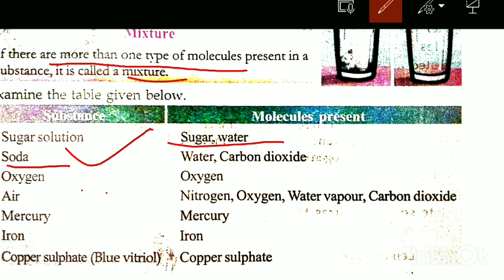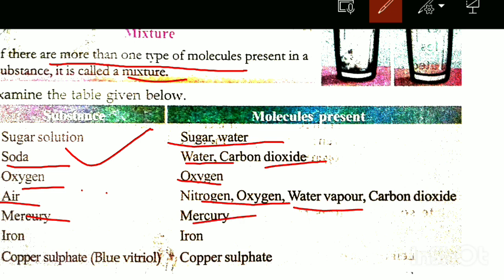Soda: water and carbon dioxide. Air: nitrogen, oxygen, water vapor, carbon dioxide. Mercury. Iron, copper surface — these are examples of mixtures.